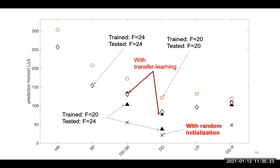Mustafa notes this is with the same total amount of data. He also points out that once you fine-tune for F=24, the model will likely perform worse on F=20 — there is some forgetting involved. That is true.